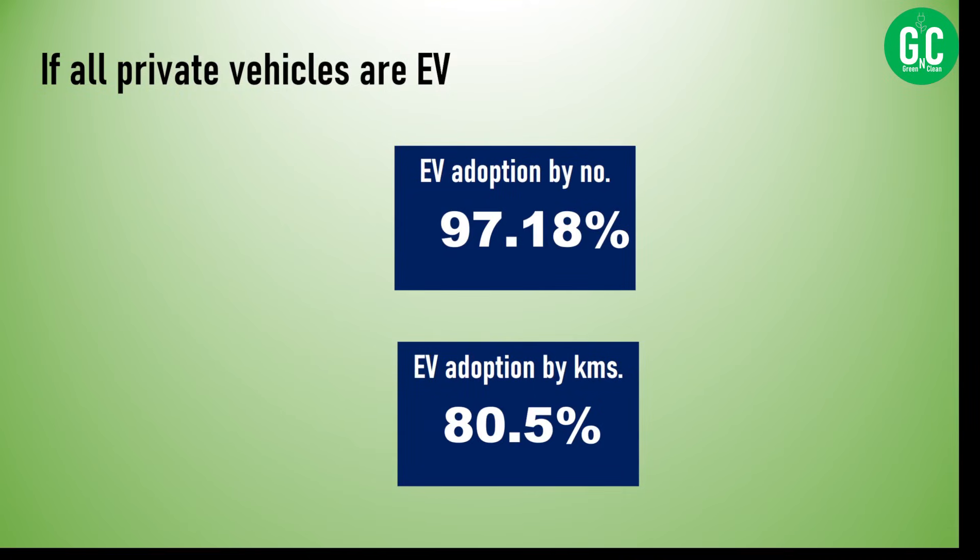Even though these numbers give a sense of EV adoption, what about pollution? One kilometer by a two-wheeler and one kilometer by a bus produce very different amounts of pollution, so we need to factor that in too. That is what the next episode will cover — looking at pollution rate alongside EV adoption rate. Thanks a lot for watching today's episode.